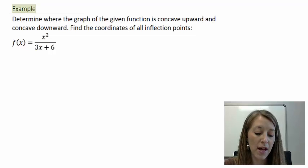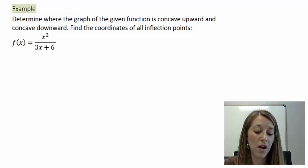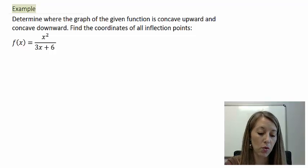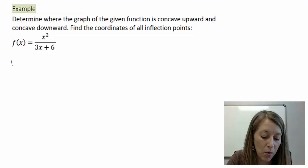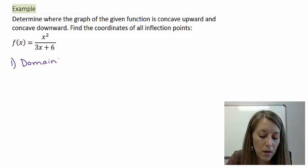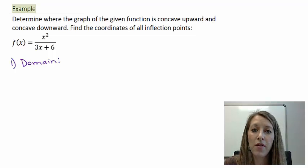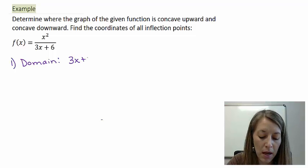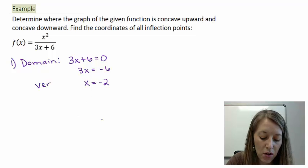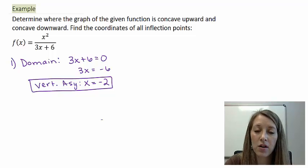They give us the function f(x) = x² / (3x + 6), and we want to figure out where this function is concave up like a cup, concave down like a frown, and the coordinates of all inflection points. Step one is to find the domain. Domain is really important when we have fractions or square roots. In this problem we have a fraction, so we need to find where the denominator equals zero. Solving that gives us x = -2, which is a vertical asymptote. So our graph cannot take on that value.